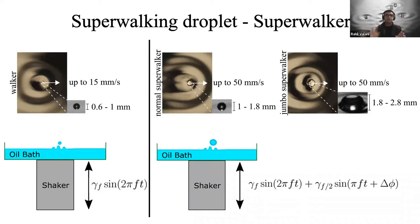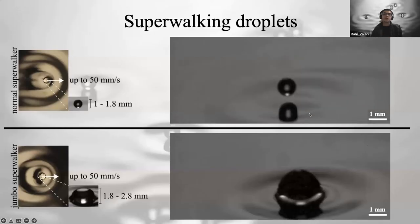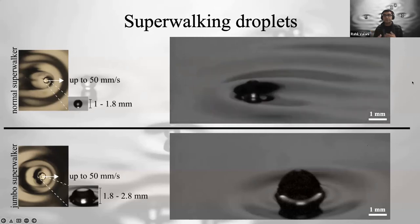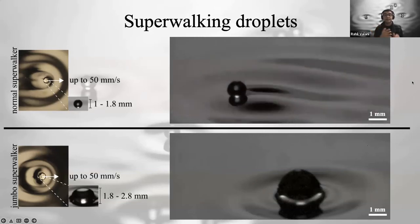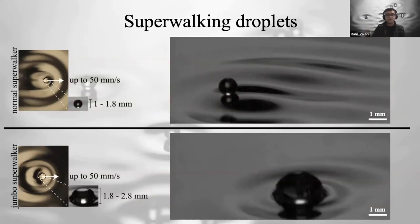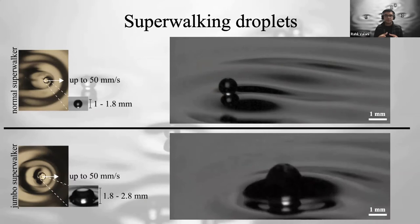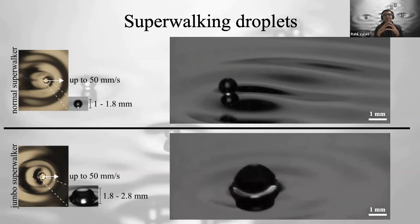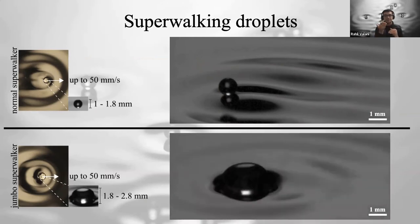We find qualitatively two different kinds of superwalkers. Normal superwalkers bounce very similarly to walkers — slightly bigger, which allows them to walk much faster. Then there are jumbo superwalkers, which are completely different: they are really large, they barely lift off from the surface, and they undergo significant internal deformations as they walk.